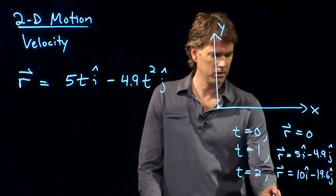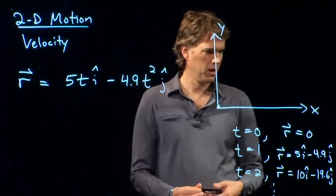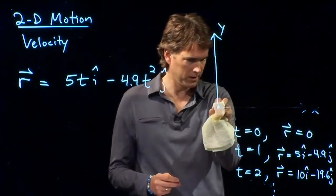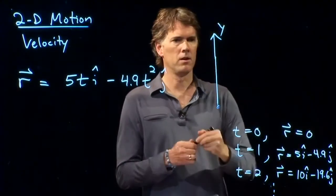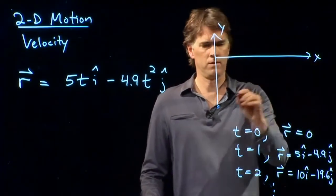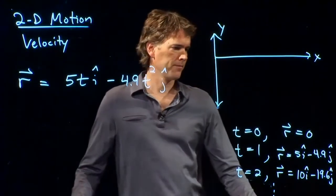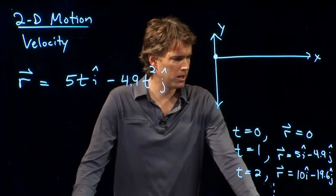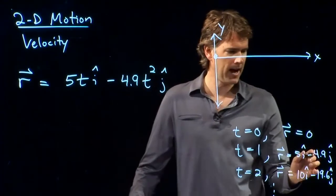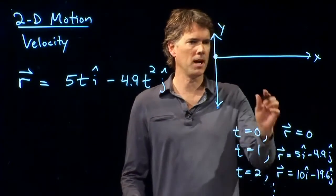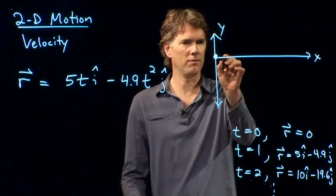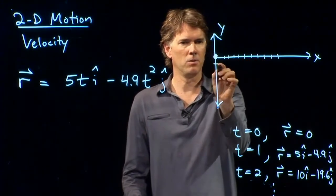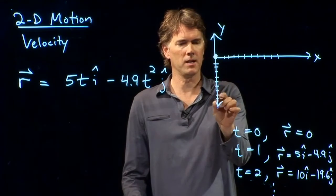And then we can keep thinking about more points along the way. All right. So, right off the bat, it looks like I need to change my coordinate system. So, let's move this x-axis up to here. All right. T equals 0. This guy is right there. At t equals 1, it is at 5 i-hat minus 4.9 j-hat. So, let's mark this off. 1, 2, 3, 4, 5, 6, 7, 8, 9, 10. 1, 2, 3, 4, 5, 6, 7, 8, 9, 10.